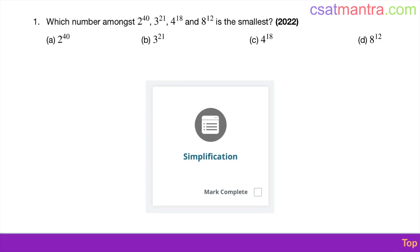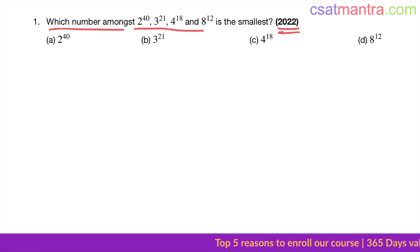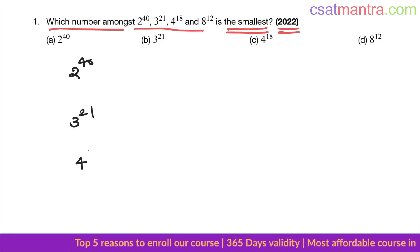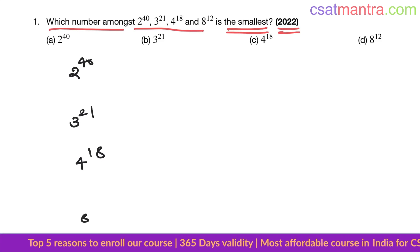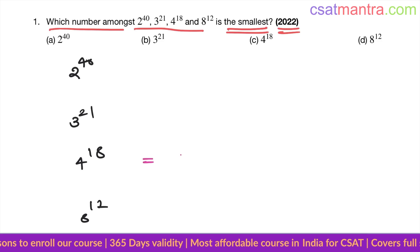This question is from 2022, based on simplification from the number system chapter. Which number among these is the smallest: 2 power 40, 3 power 21, 4 power 18, 8 power 12?